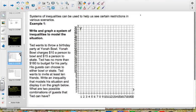Let's go ahead and read the problem. Ted wants to throw a birthday party at Yonah Bowl. Yonah Bowl charges $10 a person to bowl and $15 a person to skate. Ted wants to spend no more than $180 for his party and his guests can choose to either bowl or skate. Ted wants to invite at least 10 friends. We want to write an inequality that models the situation and display it on the graph below and we want to give two possible combinations of guests that Ted can have.